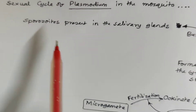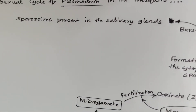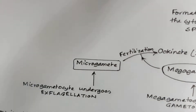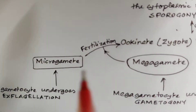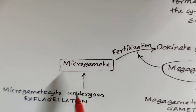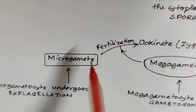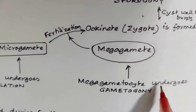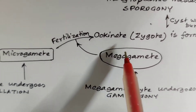Since this is the sexual cycle, it takes place within the mosquito salivary gland. The sporozoites are present in the salivary glands of mosquitos. First, the microgametocyte undergoes ex-flagellation to form the microgamete, and the megagametocyte undergoes gametogony to form the megagamete.